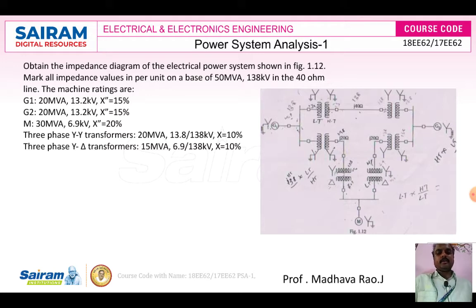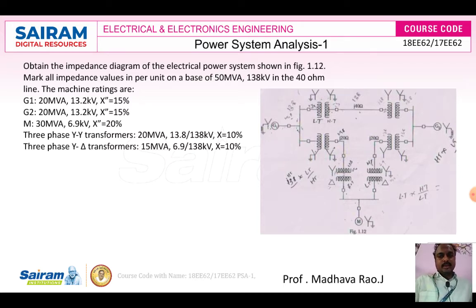We need to draw the impedance diagram and mark all impedance values in per unit on a base of 50 MVA. So 50 MVA is the base value.